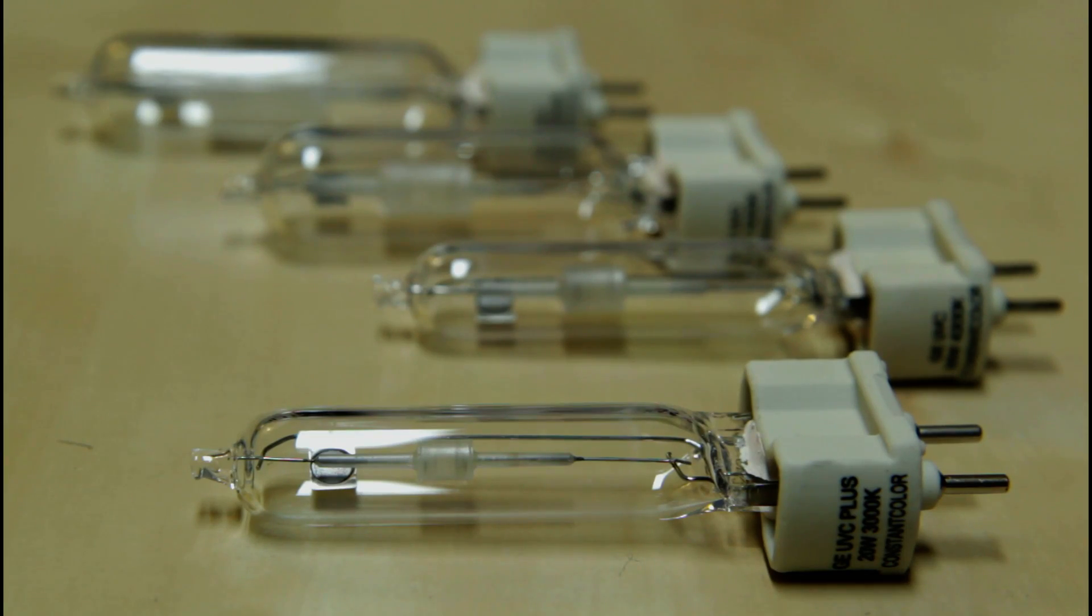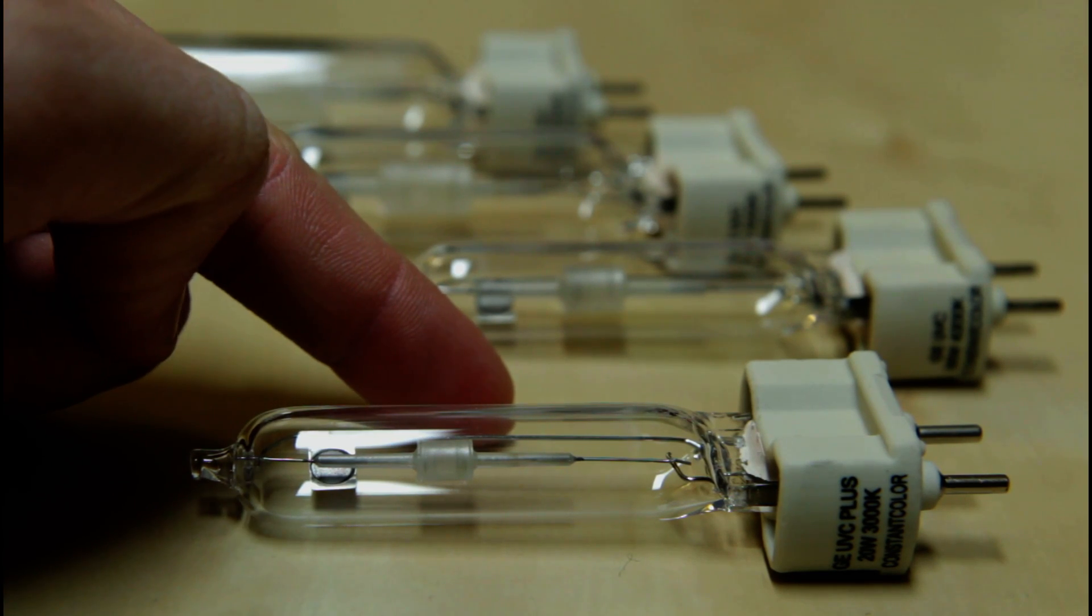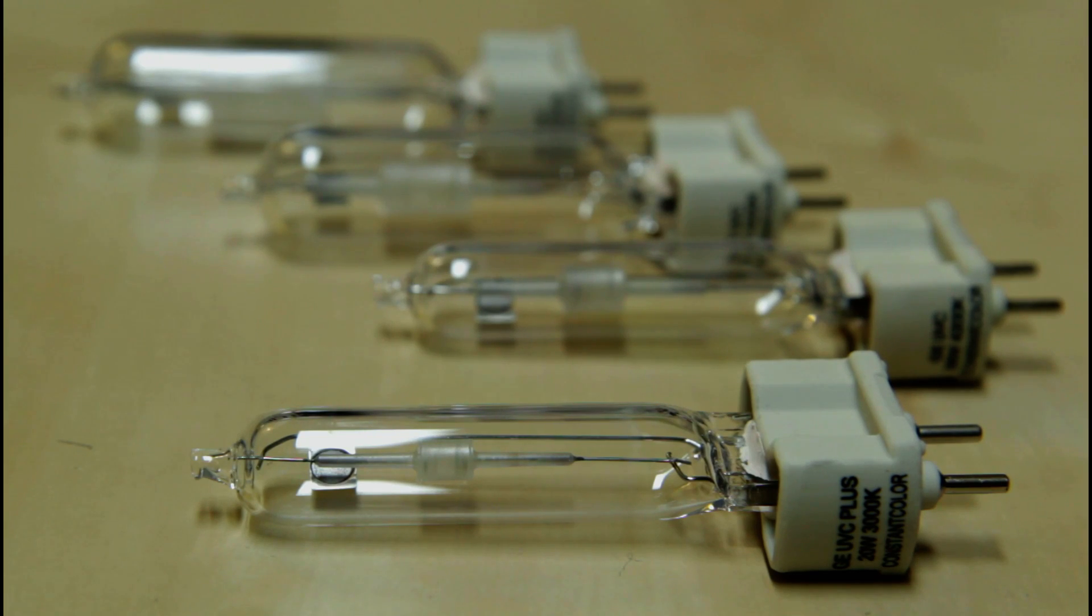Now amazingly they do an even smaller version. A 20 watt metal halide. You can see the size of the arc tube there. If I put my finger there, it is tiny. Let's have a look at it close up. Get the macro lens out.